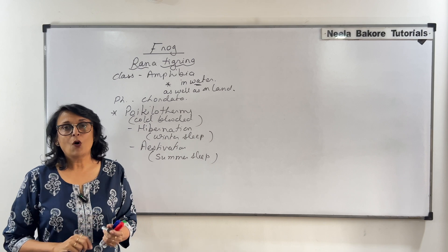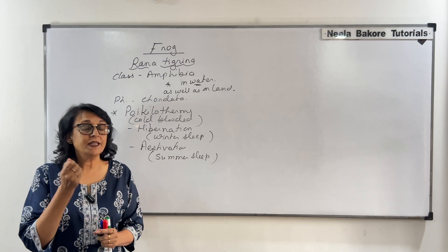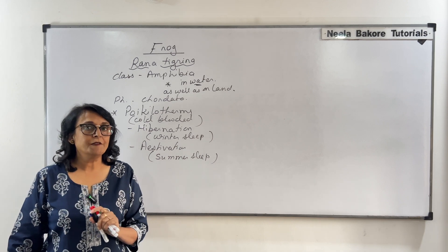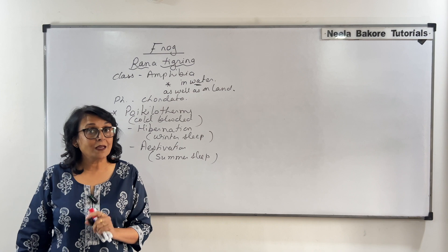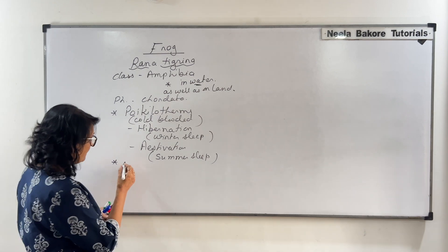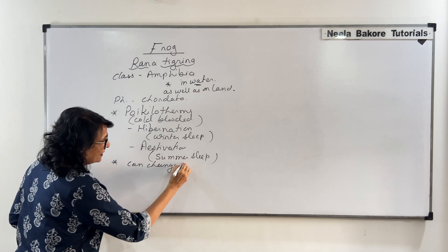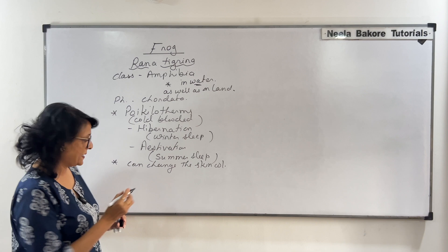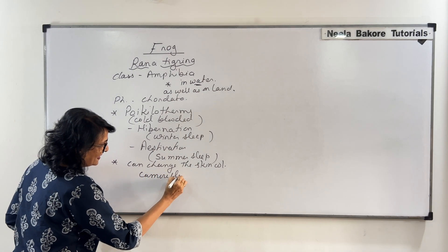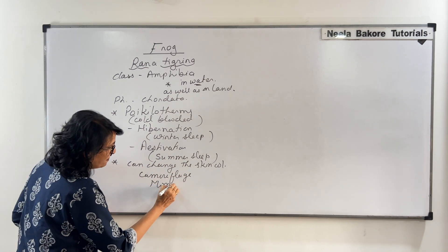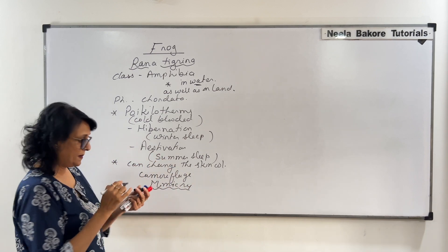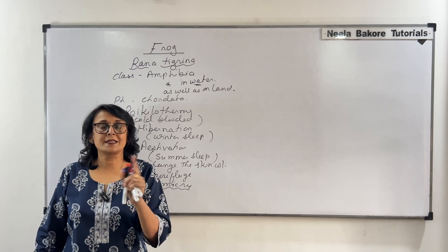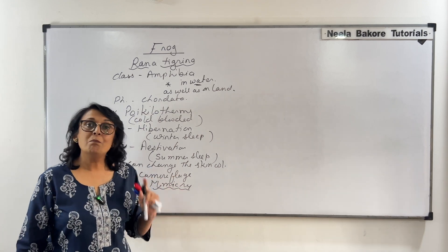Normally frogs are olive green in color. Their skin is very slimy because it is a mucous membrane. They have the capability of changing their skin color — this property is known as camouflage, also called mimicry. When they are on grass they appear green, and when sitting on the bark of a tree their skin becomes brownish, so they blend easily into their surroundings.